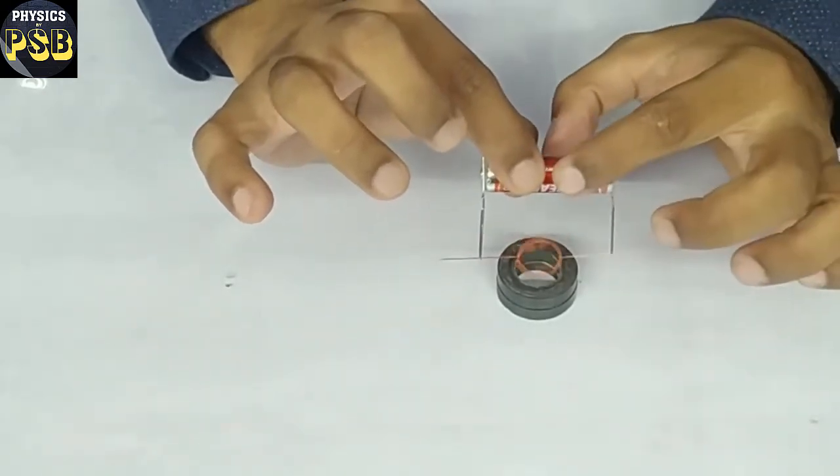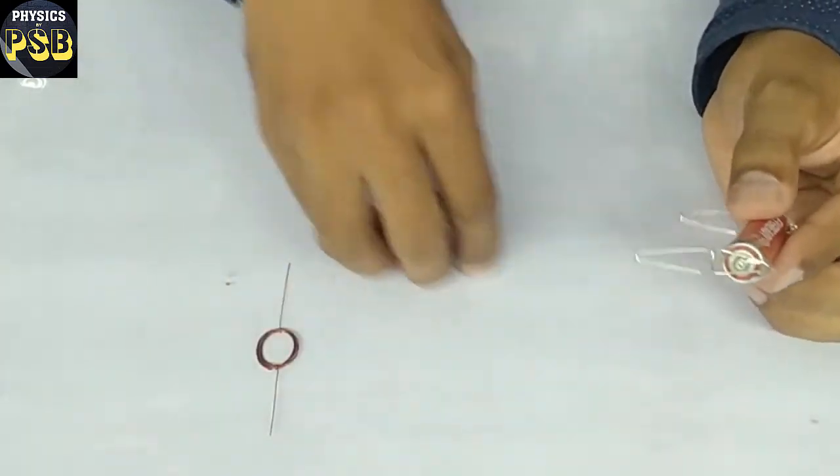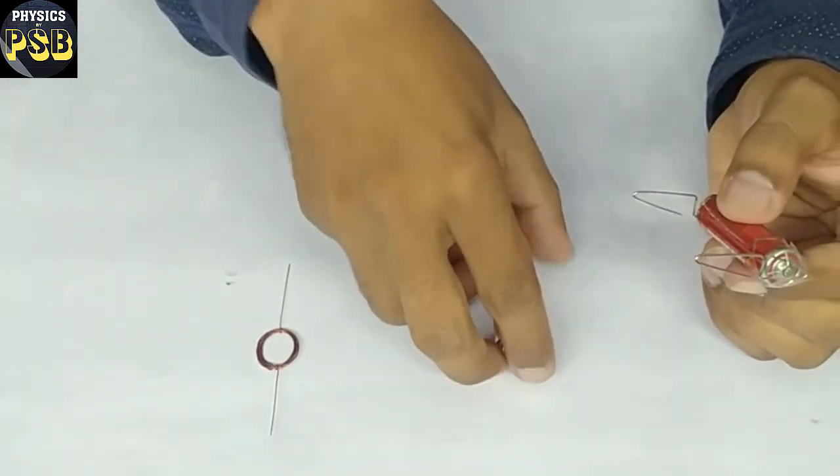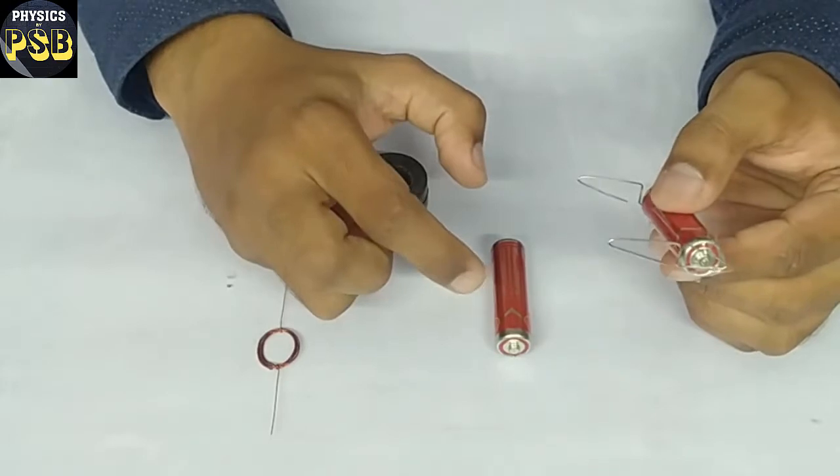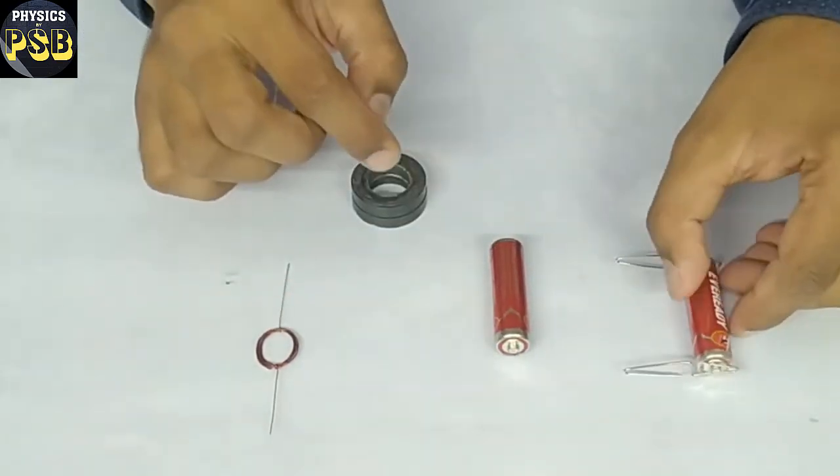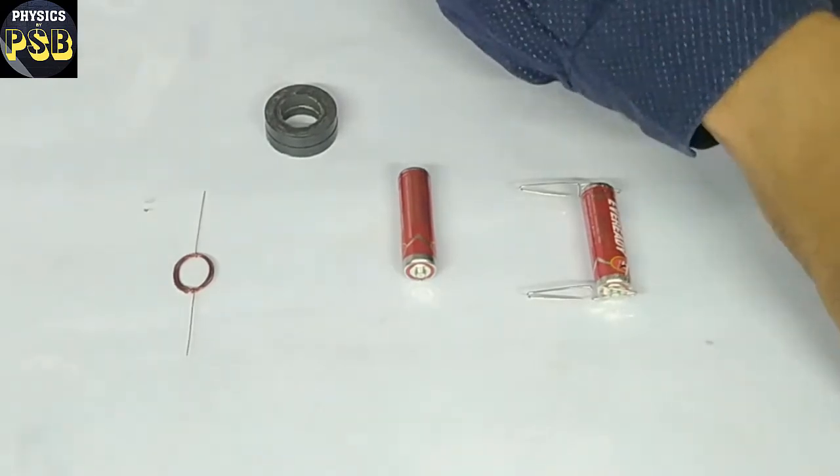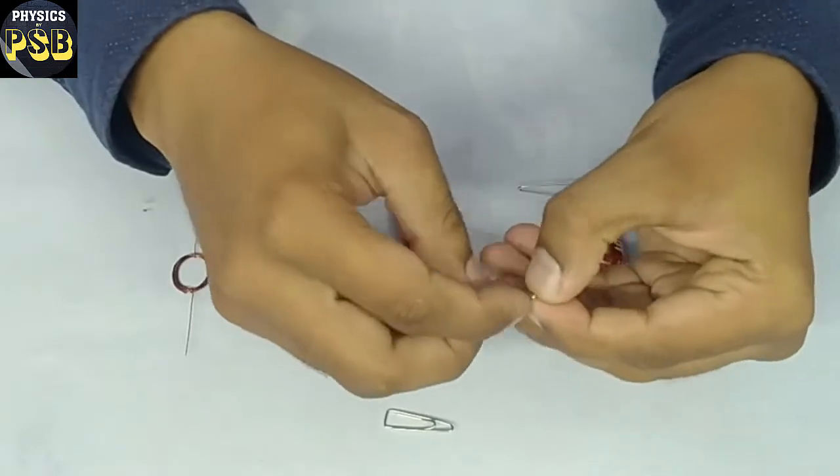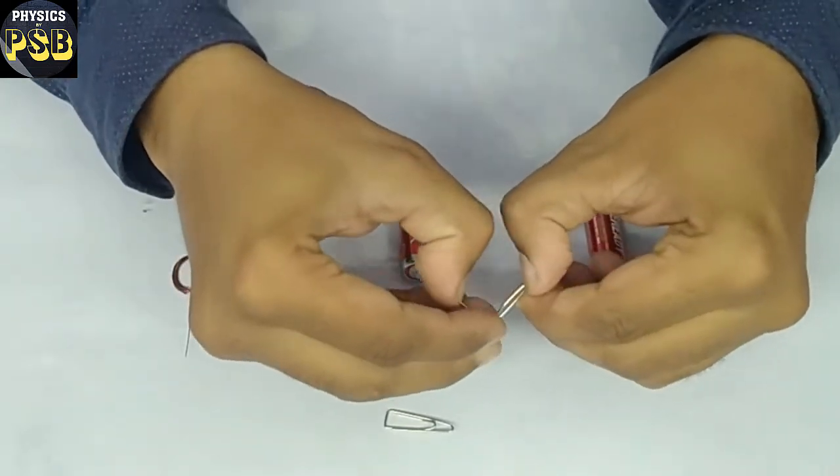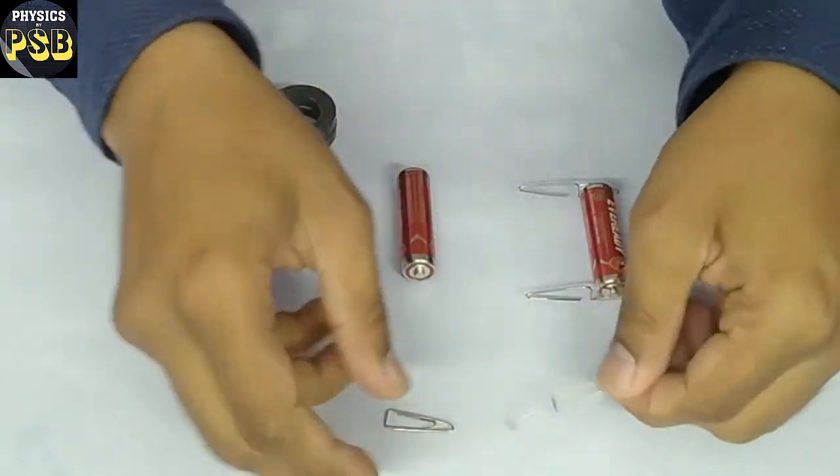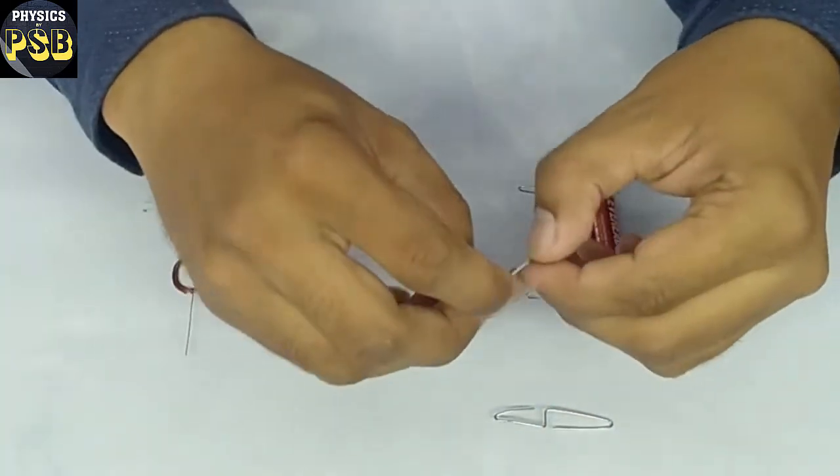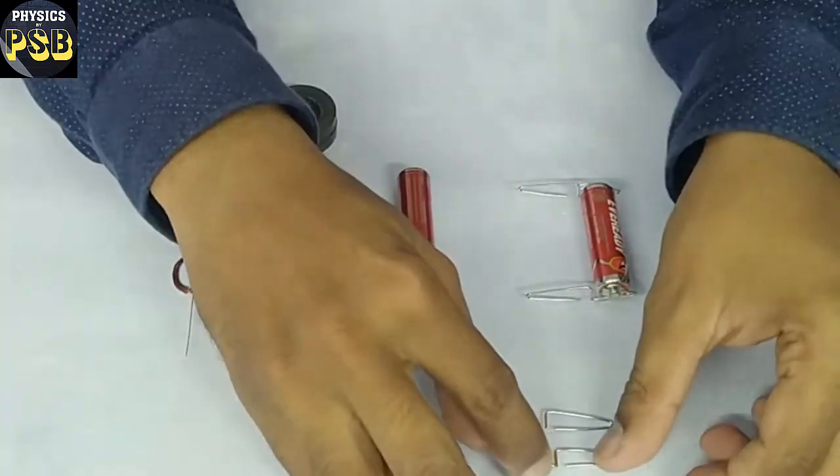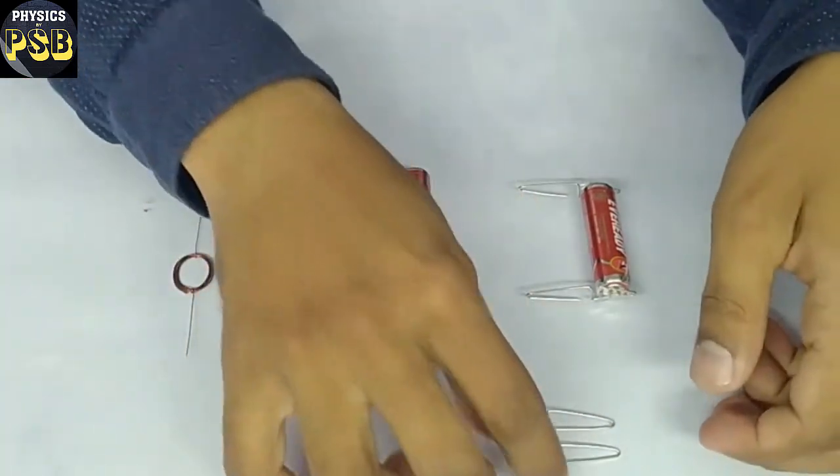Now let me tell you how I have made this. To make this DC motor you require one double-A battery. To that I have connected two paper clips. Here I have done certain modifications to the paper clip. Take two paper clips, hold this part and stretch them to appear like a letter S. Do the same to another paper clip as well. Then attach them to your double-A battery with the help of cellotape.